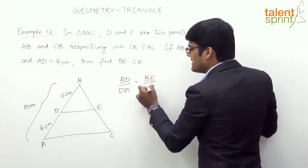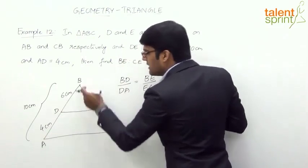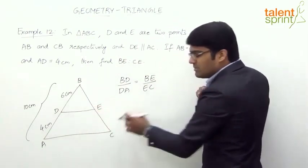BE by EC. B to D is to D to A should be equal to B to E is to E to C.